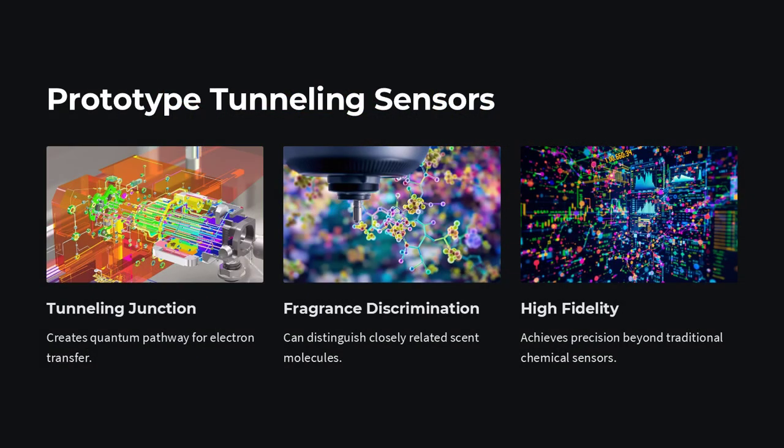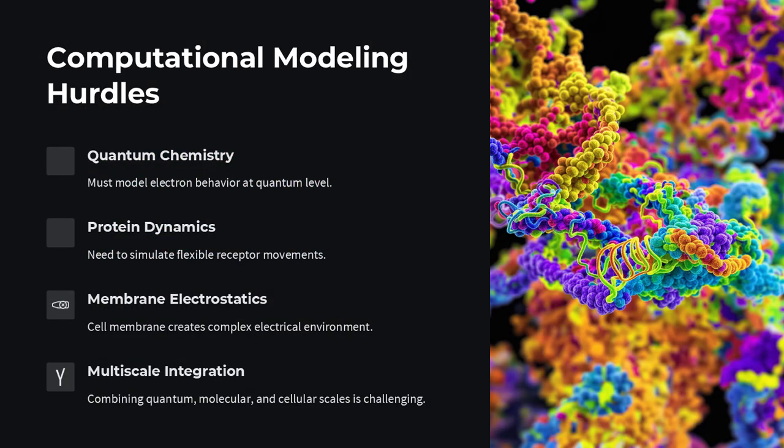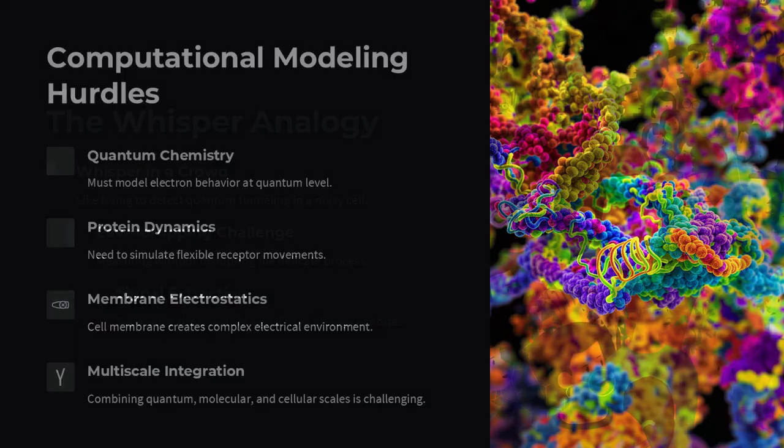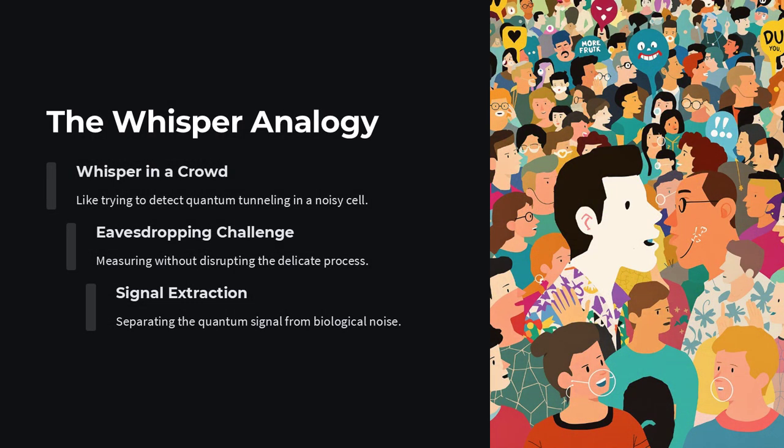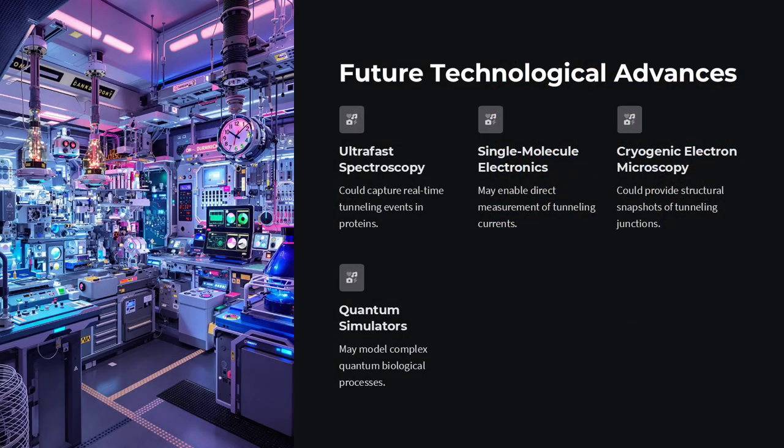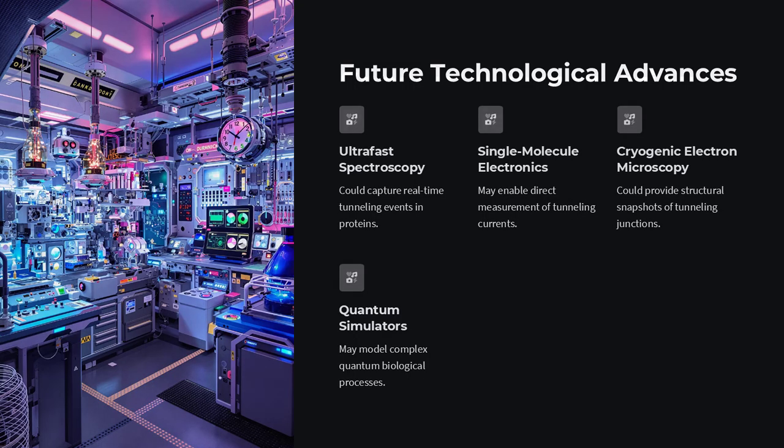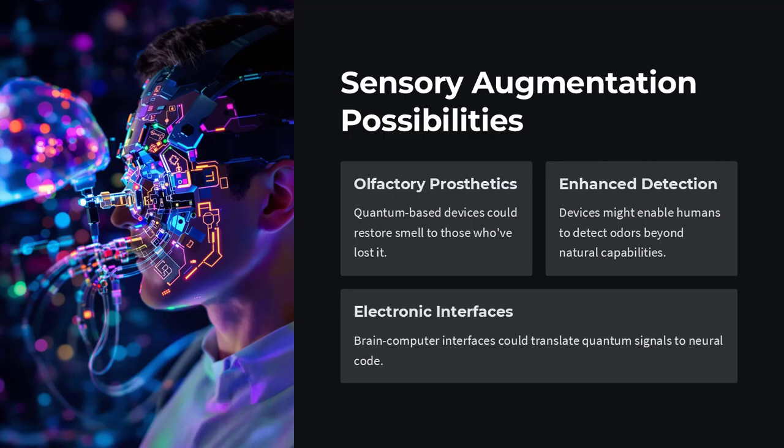Yet, even if we grant that tunneling can occur, a further challenge emerges. How do downstream neural circuits interpret those quantum signals? The olfactory bulb receives inputs from thousands of receptor types and must encode complex mixtures rapidly. Translating minute differences in tunneling rates into robust action potential patterns demands amplification mechanisms that preserve quantum-directed specificity without drowning it in biochemical noise.